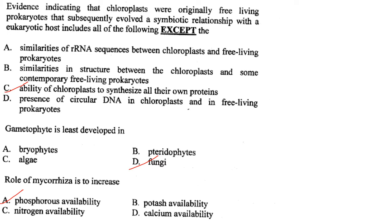Evidence that chloroplasts were originally free-living prokaryotes includes: similarity of rRNA sequences between chloroplasts and prokaryotes, similarity in structure with contemporary prokaryotes, and presence of circular DNA. However, the ability of chloroplasts to synthesize all of their proteins is incorrect — some proteins are transported to chloroplasts. Answer is option C.